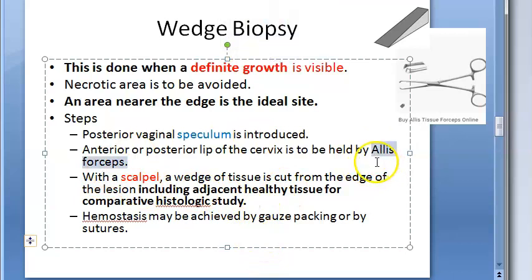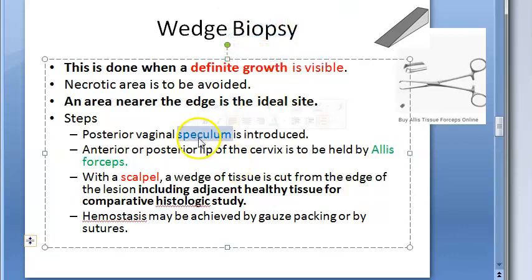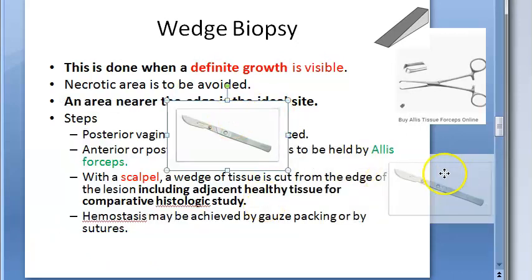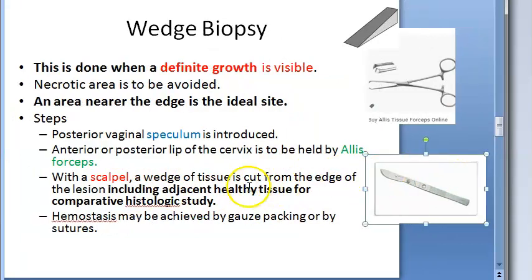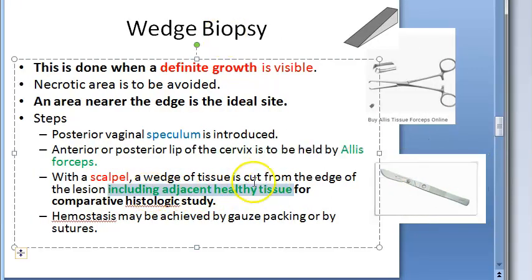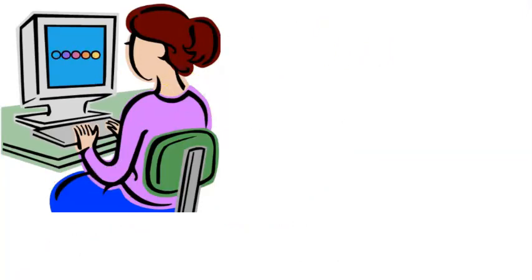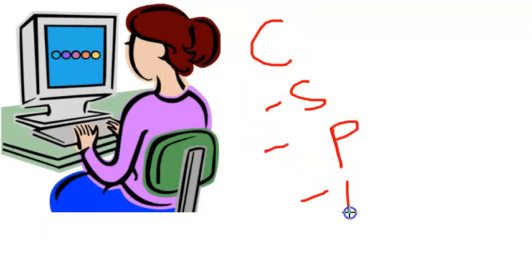To summarize the tools for wedge biopsy: a speculum is used to access the cervix, Allis forceps hold the anterior or posterior lip of the cervix, and the actual wedge of tissue is cut using a scalpel. Some adjacent healthy tissue is taken for comparison. Hemostasis can require sutures since a scalpel is used.